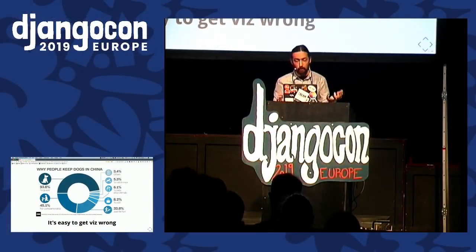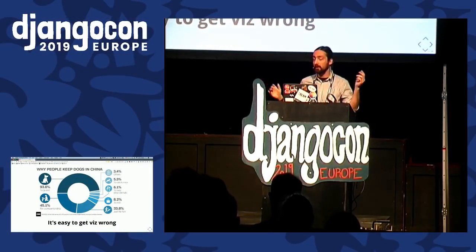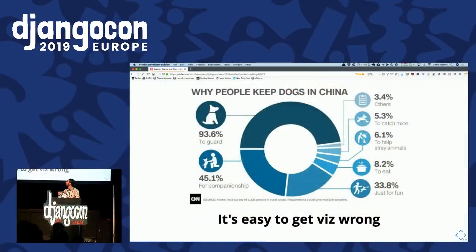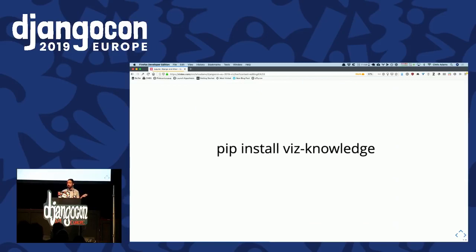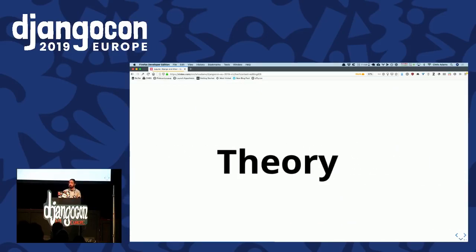Another thing: when you start working with visualization and think 'wow, there's all these things I can do,' it's very easy to get viz wrong. For example, when I look at a pie chart, I assume it adds up to 100%, and when it doesn't, it makes it harder to understand. As Pythonistas, it would be nice if we could just 'pip install viz knowledge.' So let me share some theory — I've been exploring this with work recently.